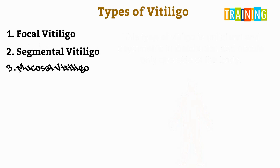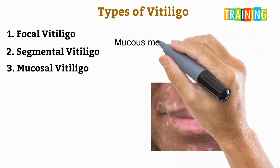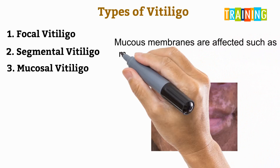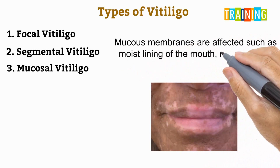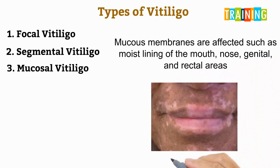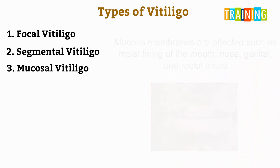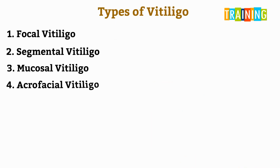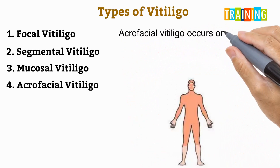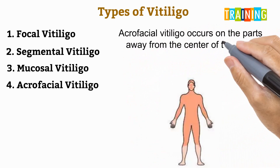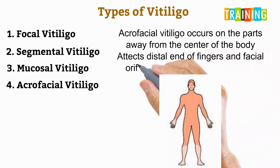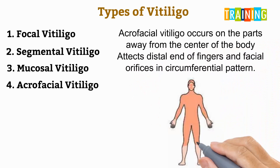Mucosal vitiligo affects mucosal membranes such as the moist lining of the mouth, nose, genital, and rectal areas. Acrofacial vitiligo occurs on parts away from the center of the body, affecting the distal end of fingers and facial orifices in a circumference pattern.